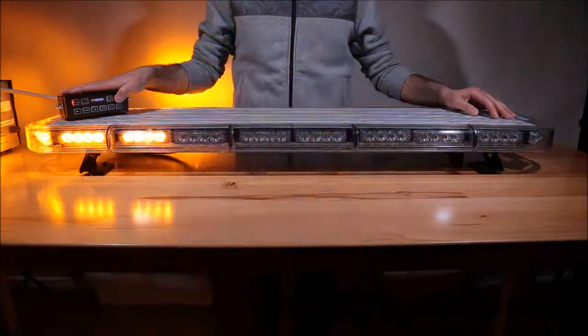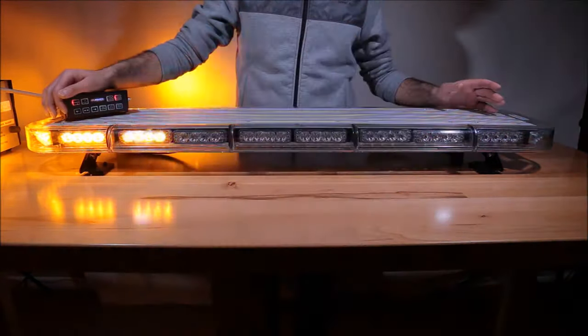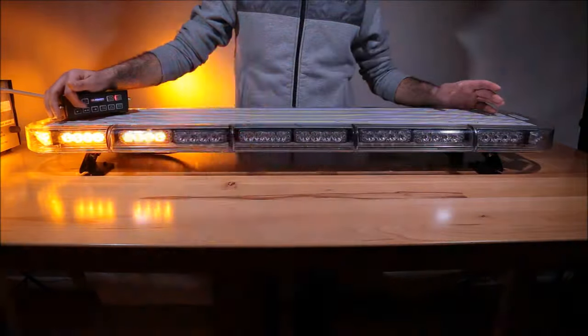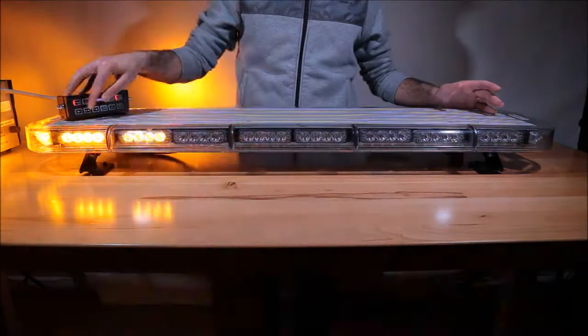While the bar is on and flashing you are able to control the back with the traffic advisory functions with left to right, center out and right to left by just clicking one of the buttons on the control box.